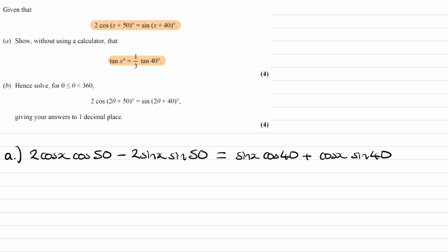We want to get it all in terms of tan — we want tan x and tan 40. If we divide both sides by cos x, the cos x terms cancel and the sin x terms become tan x. But if we also divide by cos 40, on the left-hand side we have cos 50 and sin 50, so we wouldn't be able to get tan 40 immediately. We first need to convert those 50-degree terms to be in terms of 40 degrees.